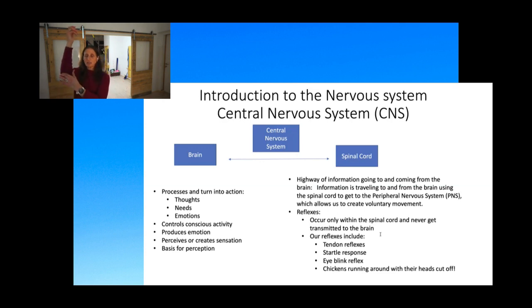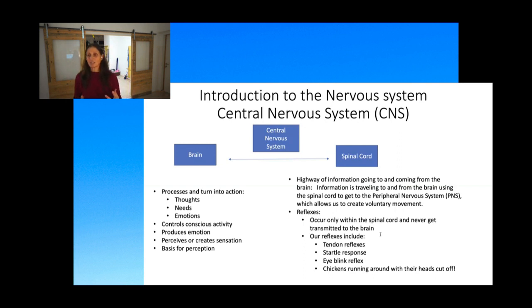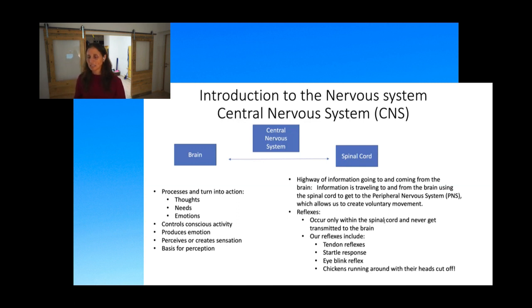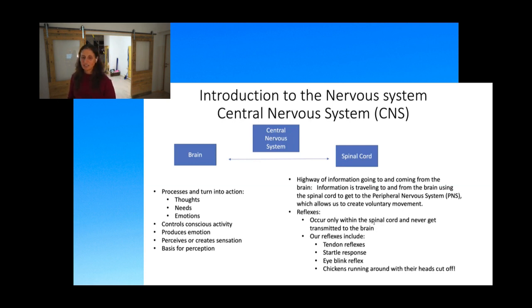Reflexes also occur at your elbow and your Achilles. This includes the eye blink response and the startle response. The startle response is not something you do on purpose — you can't stop it if you're truly startled. The eye blink when somebody throws something at your face is also a reflex. It's just happening at the level of the spinal cord. That's also why chickens run around with their heads cut off — it's a reflex, not signals from the brain.